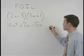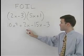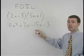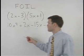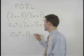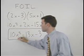positive 1, which is negative 3. Notice that positive 2x minus 15x simplifies to negative 13x, so we have 10x squared minus 13x minus 3 as our final answer.